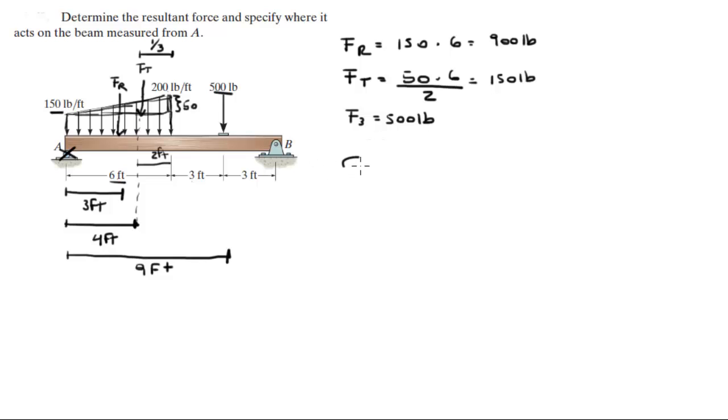So you know that the moments at A is equal to FR times three feet, going clockwise, so it's positive, plus FT times four feet, also positive because it's going clockwise, plus the 500 pound force times nine feet, also going clockwise.